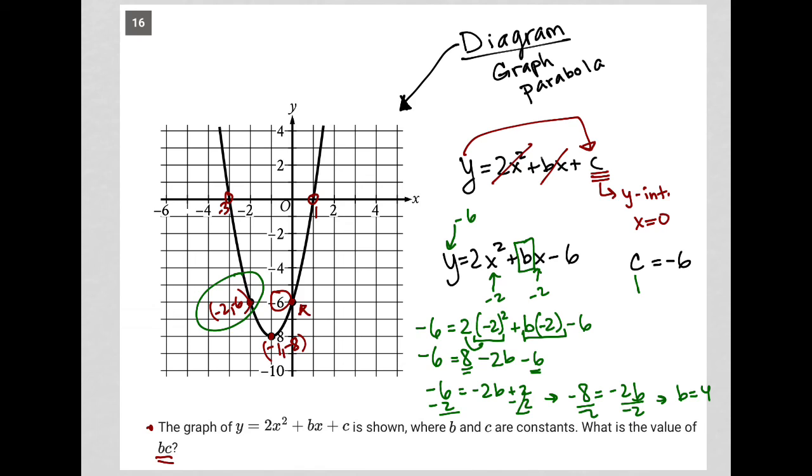So now I know c is negative 6, and I know b is positive 4. The question is asking for bc, which means it wants me to figure out what 4 times negative 6 is, which equals negative 24. So there is my answer, negative 24.